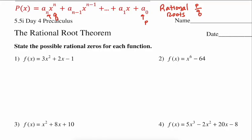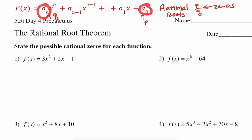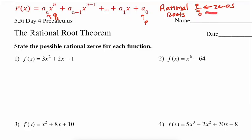Any rational numbers — remember, those are any number that can be written as a fraction — that become zeros for this polynomial always have to be in the form P over Q. So if the constant term is 5 and the leading coefficient is 7, any number that divides evenly into 5 can go on top, and any number that divides evenly into 7 would go on the bottom. Those are the possibilities of the nice numbers that work.